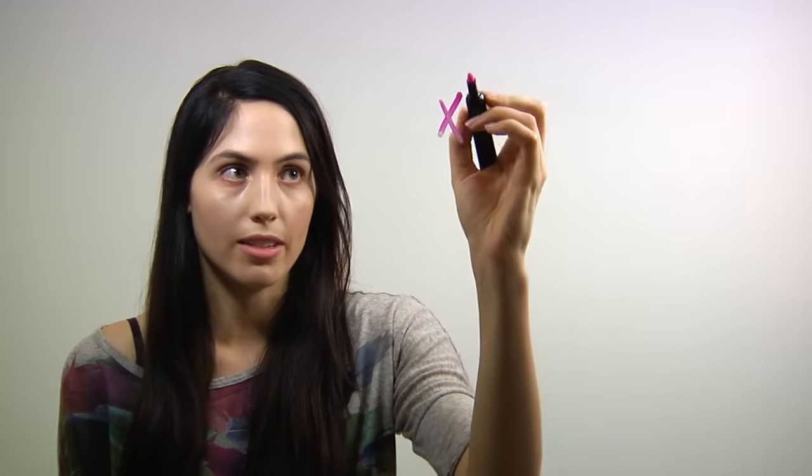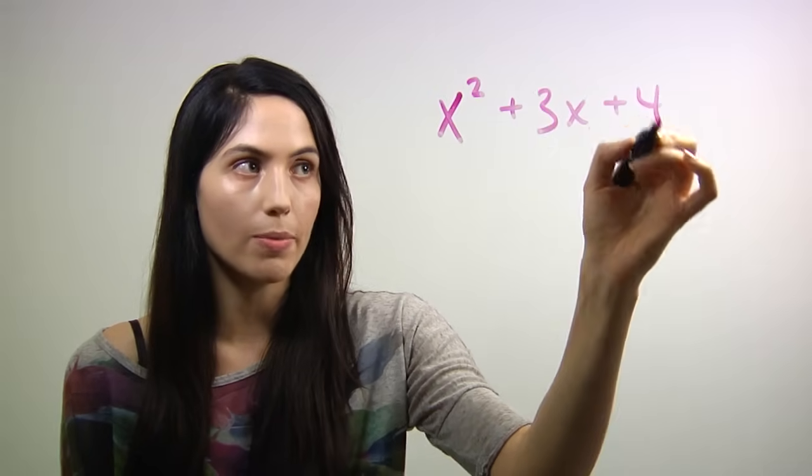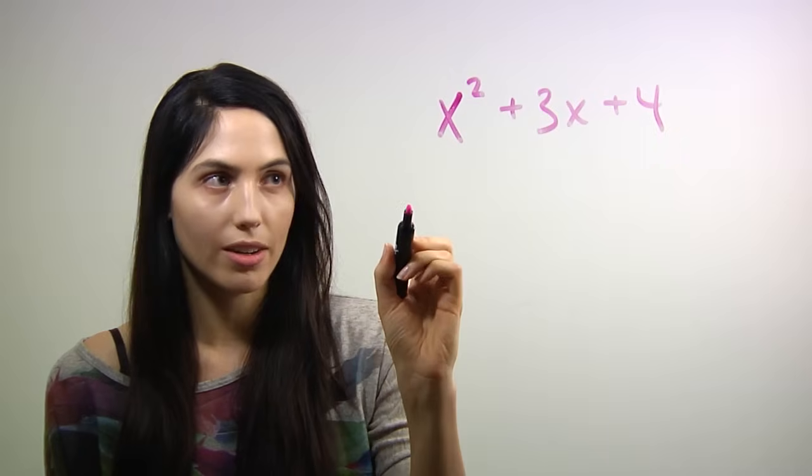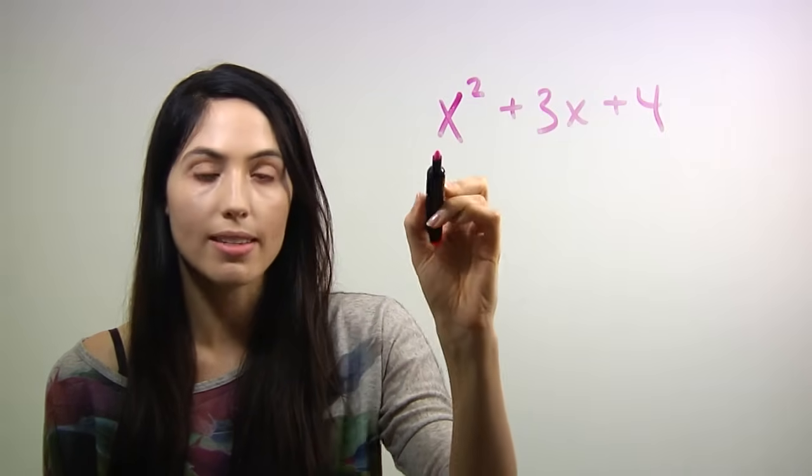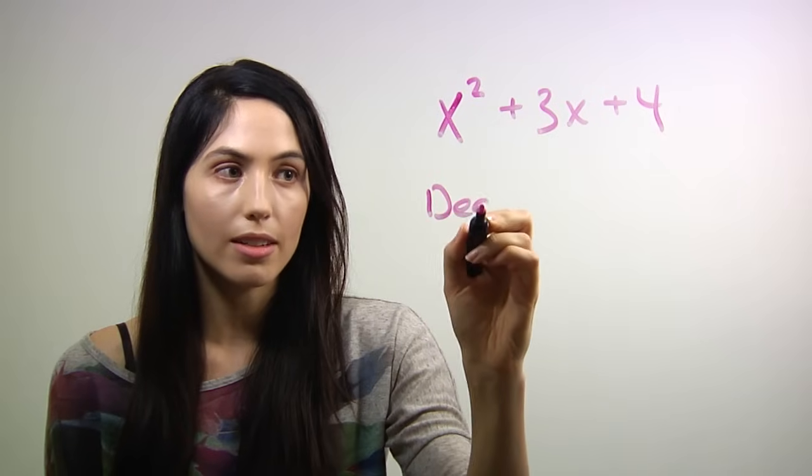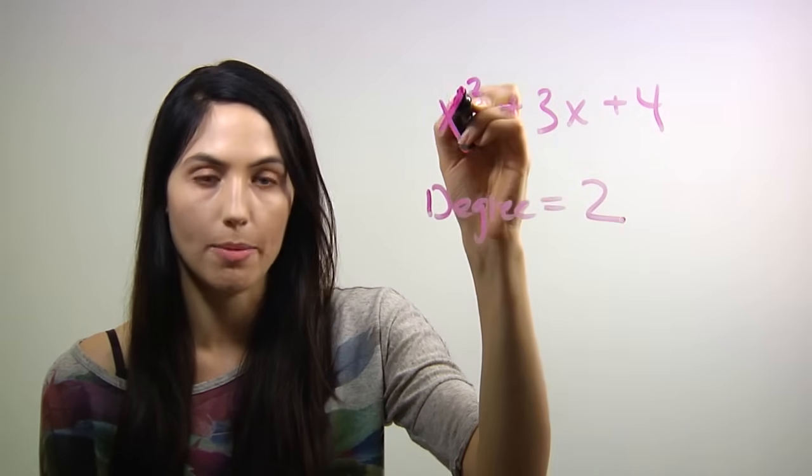So for instance, if your polynomial is x squared plus 3x plus 4, the degree is the highest power of x that appears in your polynomial. So in this case, x squared is the highest power of x, and the degree is 2. The degree is 2, so it's that power.